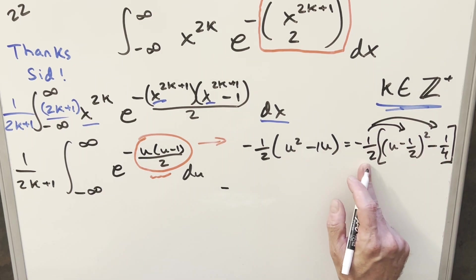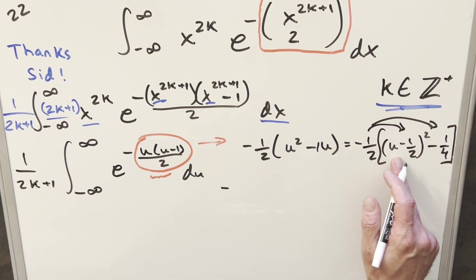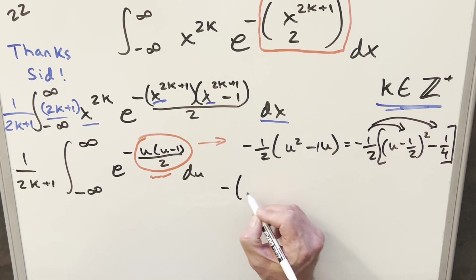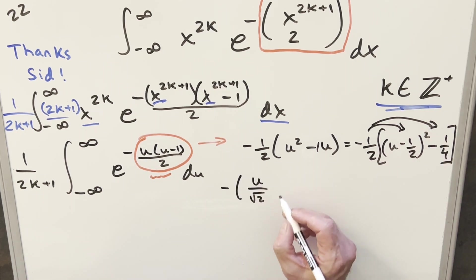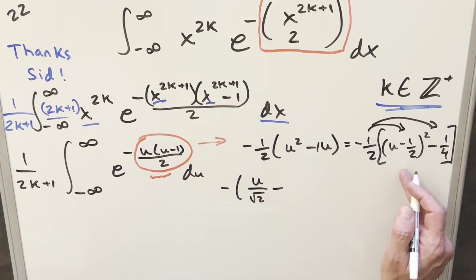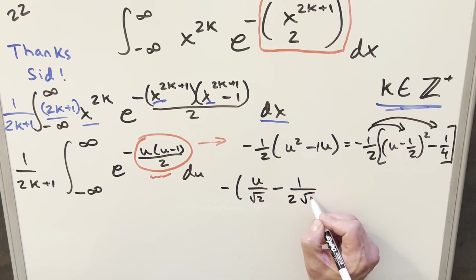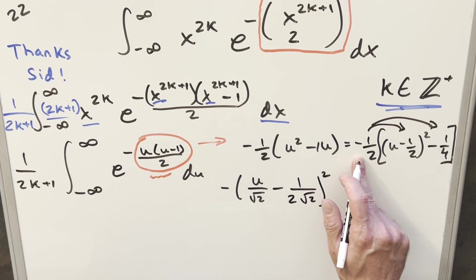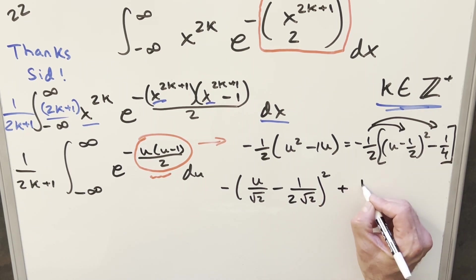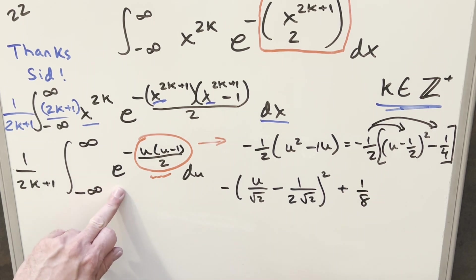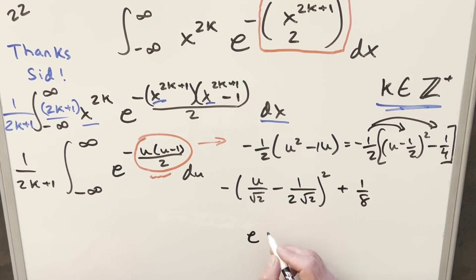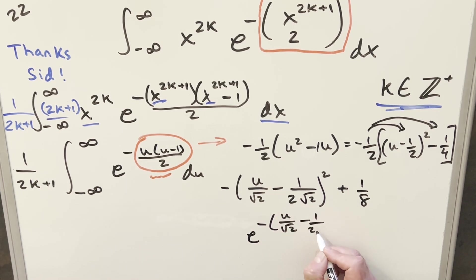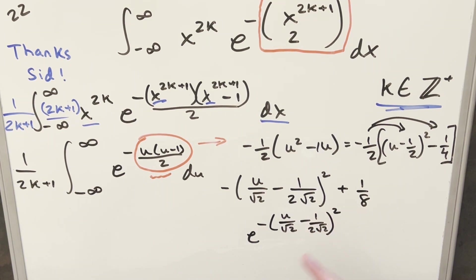Now let me distribute the minus one-half back into everything. The (u minus one-half) squared term becomes (u over root 2 minus 1 over (2 root 2)) all squared. Then distributing minus one-half into the minus one-fourth gives plus one-eighth. Remember this is all on the exponent of e, so we have e to the minus that whole square, times e to the one-eighth — which I can break off as a separate constant factor.